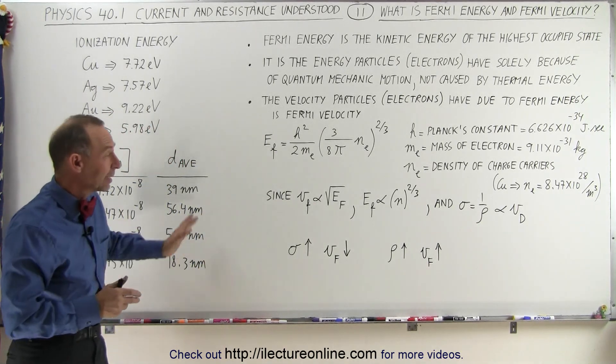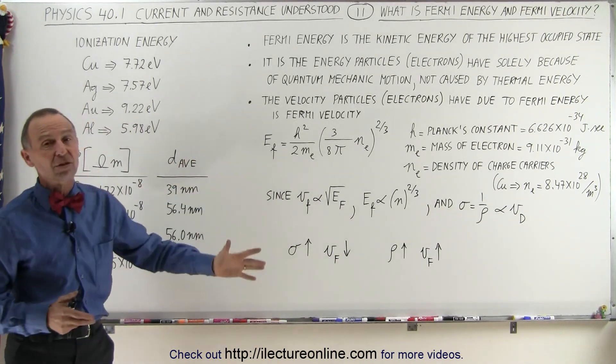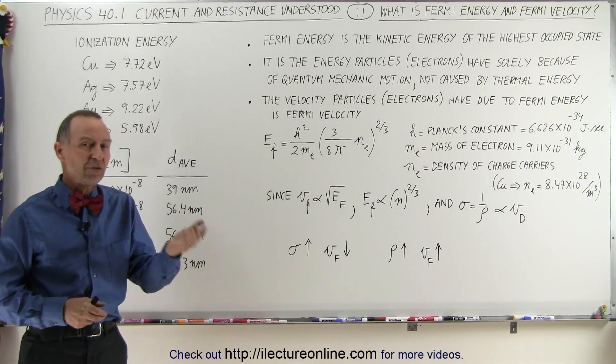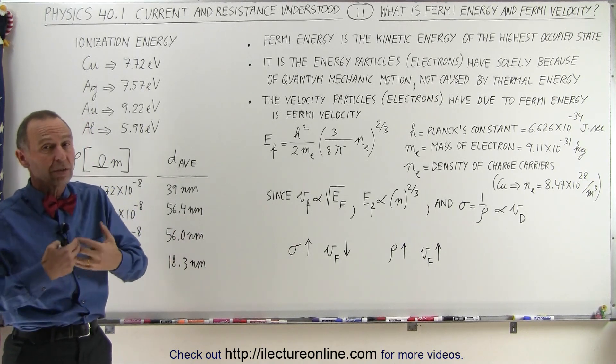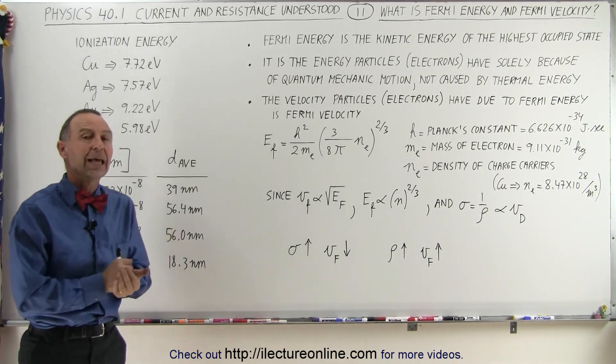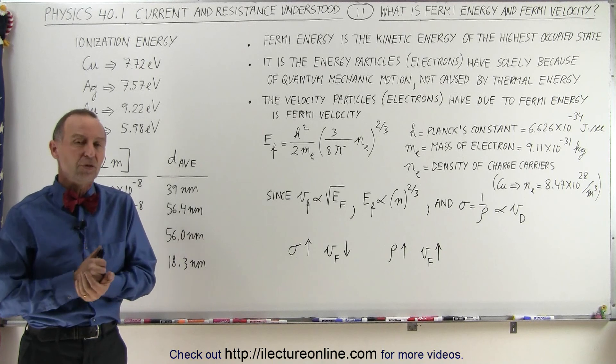And then if you mix with that the quantum mechanic behavior of the material, which of course is quite complicated, you have a full picture of why some elements such as copper, silver, gold, and aluminum conduct charges quite readily, while others do not so much.